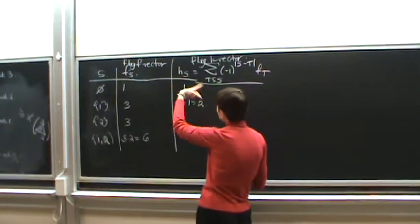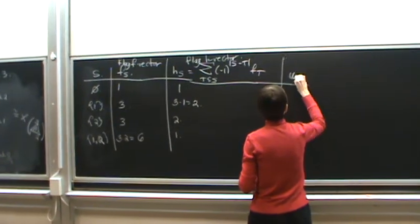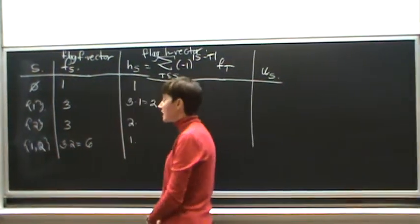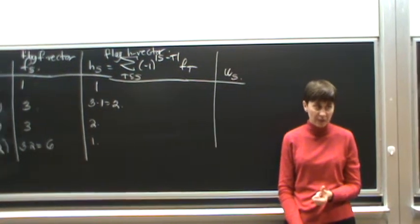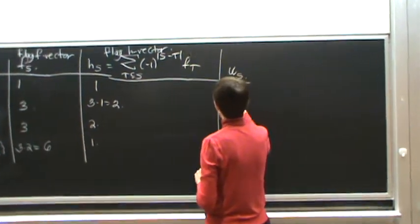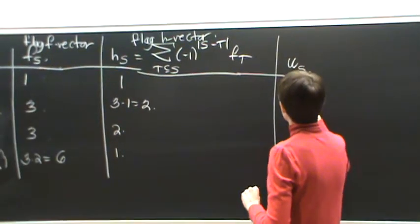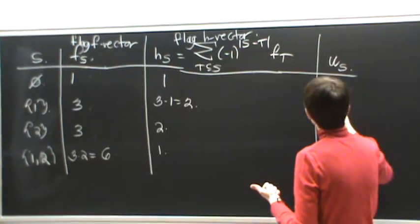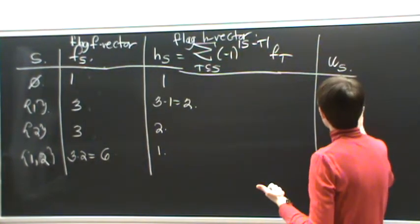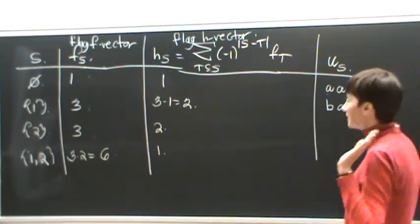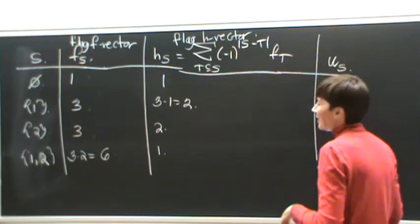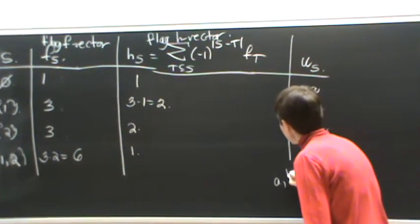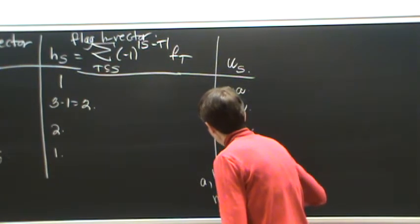I want to encode the flag h information using a non-commutative monomial. I want to encode these subsets. For example, the empty set — we did not take rank 1 or rank 2, so 1 and 2 are absent. To denote that, we have A in the first position and A in the second position. To encode the subset {1}: 1 is in, so B is for 'be there,' and A is for 'absent.' For the subset {2}: AB. And finally {1,2}: BB. This is just a non-commutative monomial — A and B are non-commutative, which is very important for this talk.